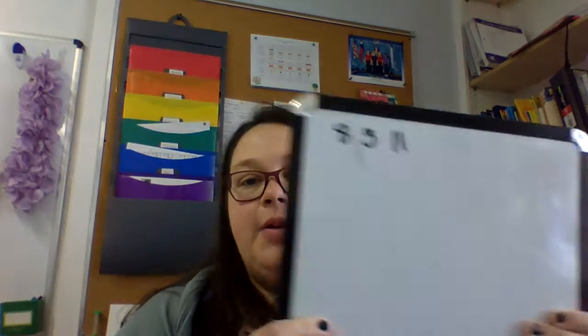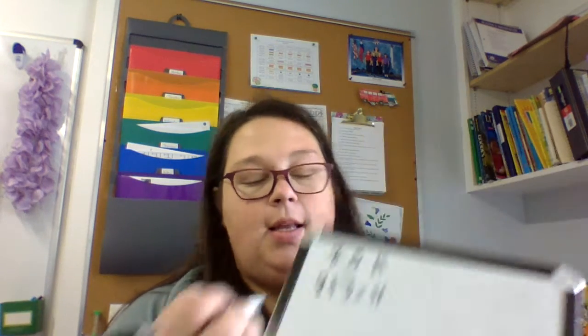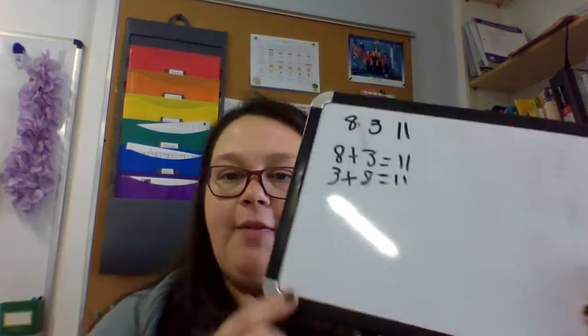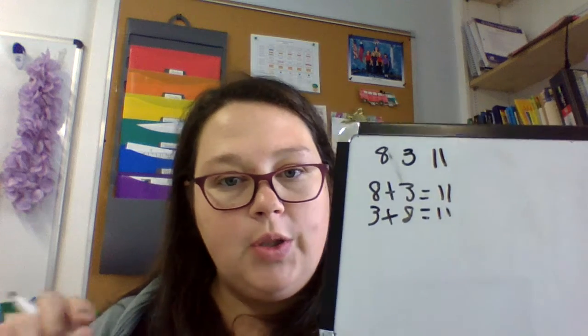First we're talking about fact families. So let's say you have 8, 3, and 11. So 8 plus 3 is going to equal 11, and also 3 plus 8 is going to equal 11. Do you see how the 11 is always the answer when you're doing the two small numbers?